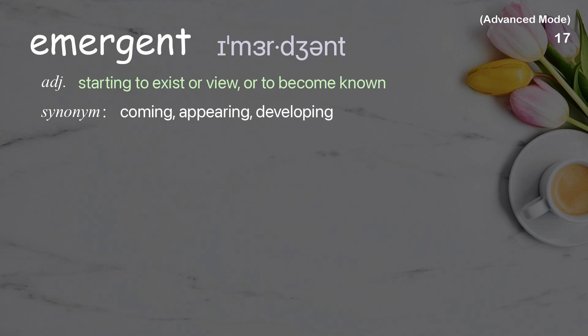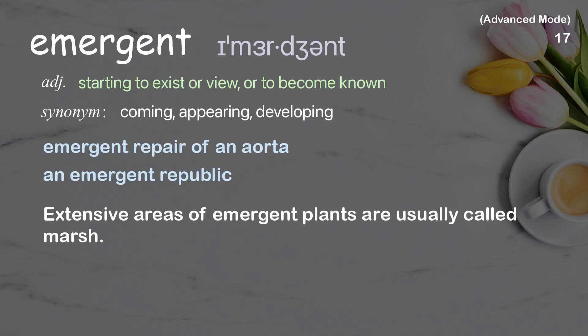Emergent: Starting to exist or become known. Examples: Emergent repair of an aorta. An emergent republic. Extensive areas of emergent plants are usually called marsh.